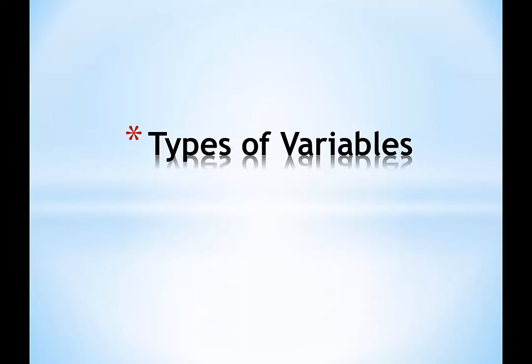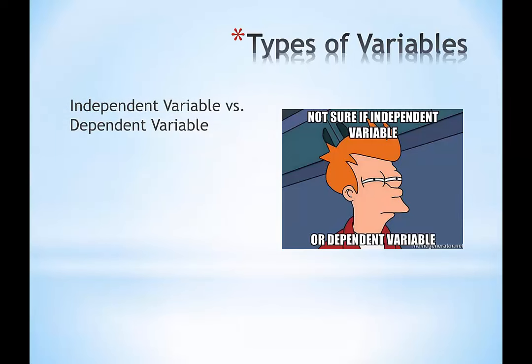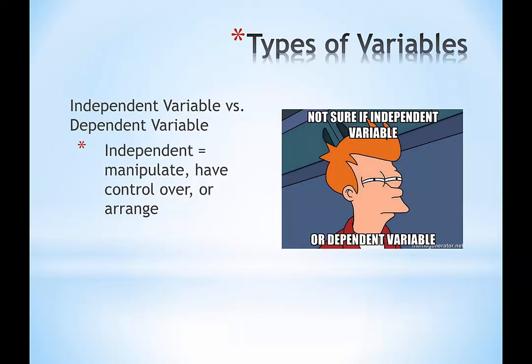In prior screencasts, I've already used some of these terms because sometimes it's hard to do things in a linear order, but I wanted to come back and give you firm definitions on which we can base the course. You can see a Bart Simpson meme: not sure if independent variable or dependent variable. This is one of those fundamental topics that undergraduate psychology majors just need to memorize—know it so well backwards and forwards they don't get confused. It's easy to get confused because the words are so similar. One key differentiation in this screencast is the independent variable versus the dependent variable.